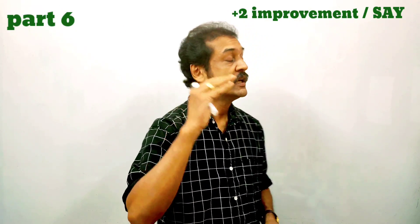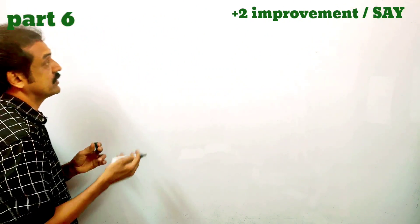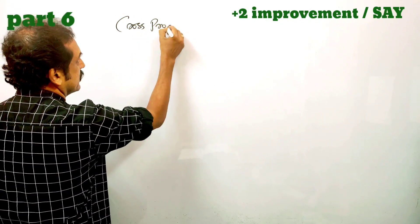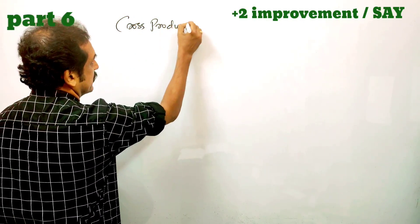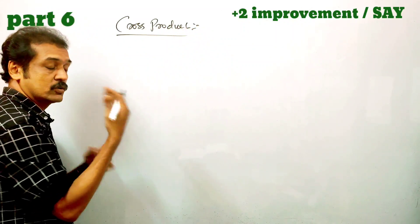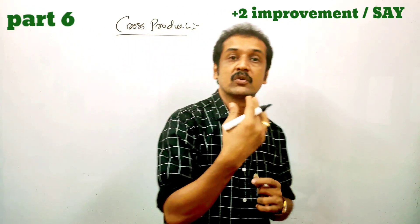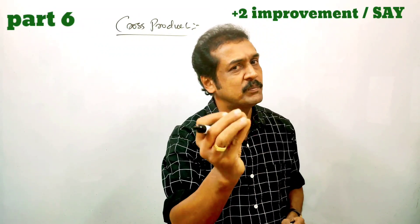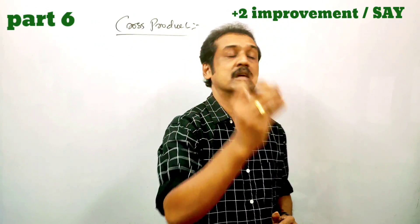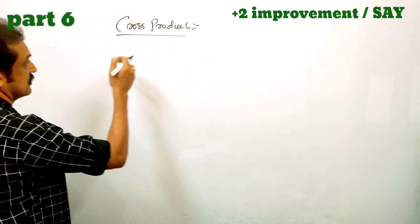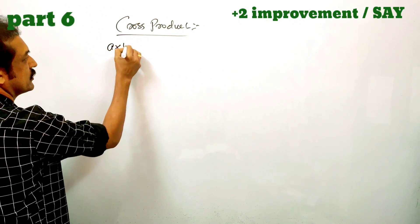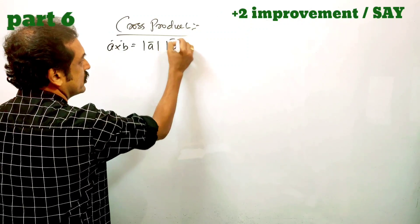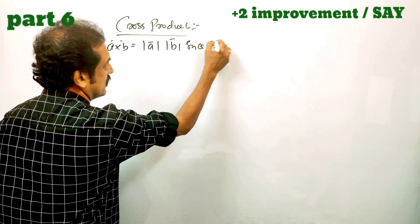If you want to learn how easy to mark score, let's try the cross product. A cross B is the definition: modulus A into modulus B into sin theta into unit vector.